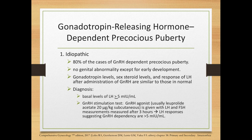If basal LH is not diagnostic, we perform the GnRH stimulation test. A GnRH agonist — usually leuprolide acetate, 20 micrograms per kilogram subcutaneous — is given, with LH and FSH measured after 3 hours. LH responses greater than 5 mIU/mL suggest GnRH dependency.